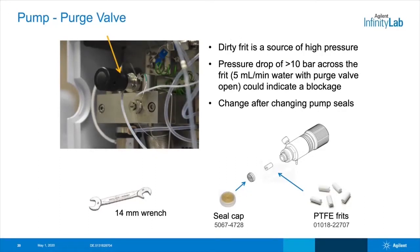The purge valve sits on the pump head. When the purge valve is opened by unscrewing the knob, the flow from the pump is sent right to waste, bypassing the rest of the instrument. This is really handy to prime the degasser and the pump when switching solvents. On some systems, the purge valve unscrews from the front of the pump head. On other systems, there's a separate bracket holding the purge valve to the pump head. Once the purge valve assembly is removed, you will find a gold seal, and underneath is a PTFE frit. Replace this frit as well as the gold seal cap routinely. Dirty frits are a common cause of high pressure in an LC system and can be a quick first step in troubleshooting pressure issues.